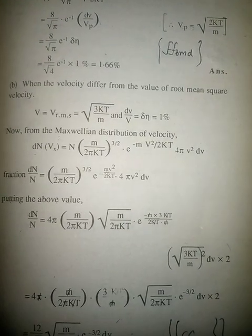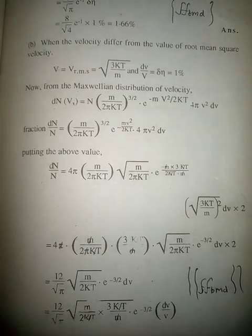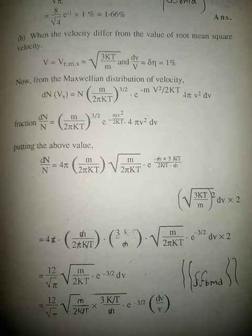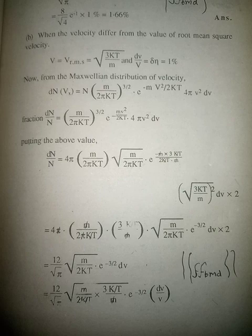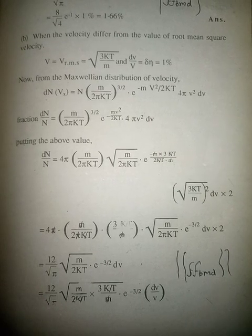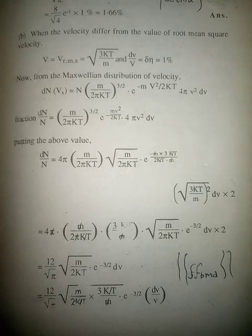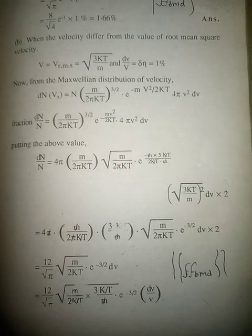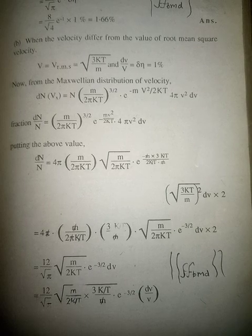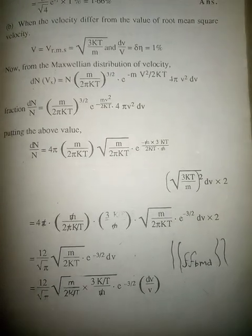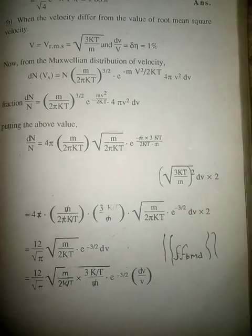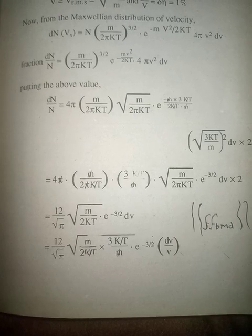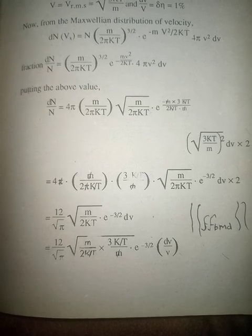When the velocity differs from the root mean square velocity, v = v_rms = √(3kT/m), and dv/v = Δη = 1 percent. From the Maxwell distribution of velocities, dN_v = n × (m/2πkT)^(3/2) × e^(−mv²/2kT) × 4π × v² dv, so the fraction dN/N = (m/2πkT)^(3/2) × e^(−mv²/2kT) × 4π × v² dv.